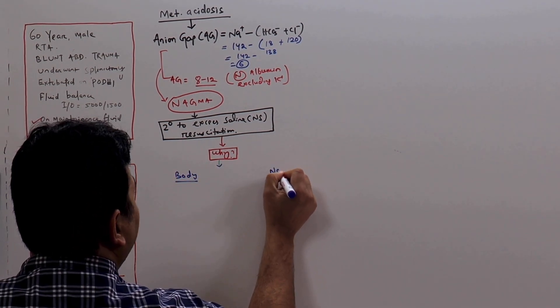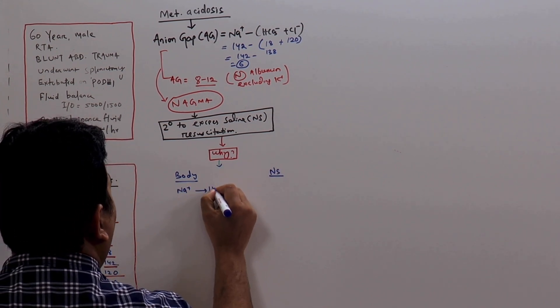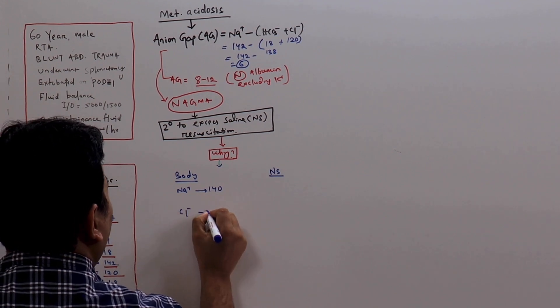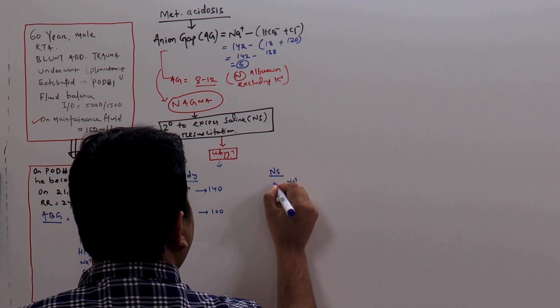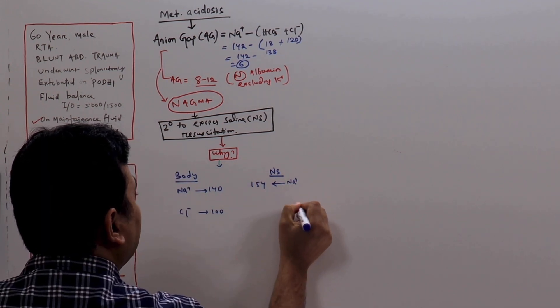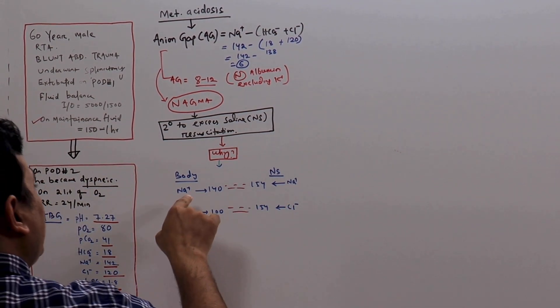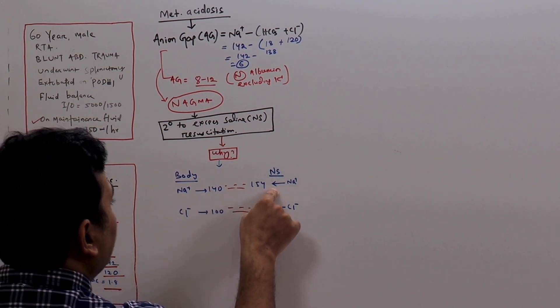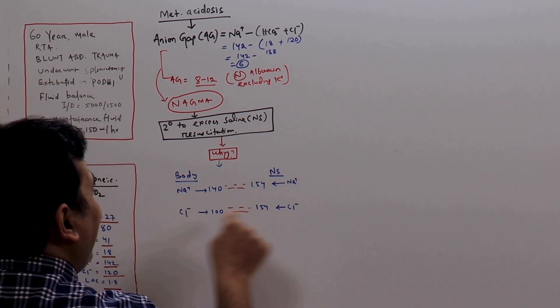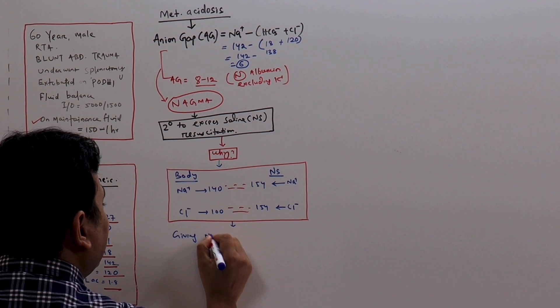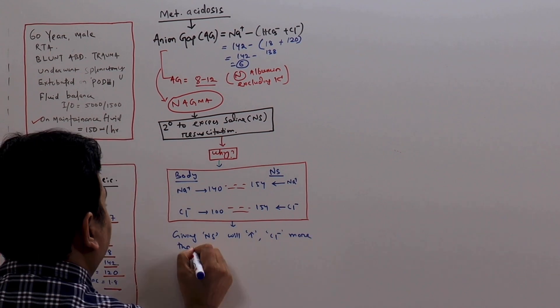This is our body. We are giving normal saline from outside. In the body, we have sodium, how much? 140 average. Chloride is 100 average. When we give saline from outside, the sodium here is 154 milliequivalent and the chloride is 154 milliequivalent. You can see here, the gradient between the plasma sodium and the sodium in the normal saline is less than the gradient between the plasma chloride and the chloride in the normal saline.